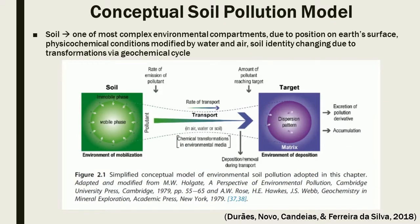Soil is one of the most complex environmental compartments, where this complexity arises from its position on Earth's surface. Soil identity is changing as it passes through the major transformations of a geochemical cycle, by the redistribution, fractionation, and mixing of its constituents with other materials and pollutants. Figure 2.1 is a conceptual soil pollution model created using the CLEAR approach and represents the overall cycling of pollutants in the soil system.